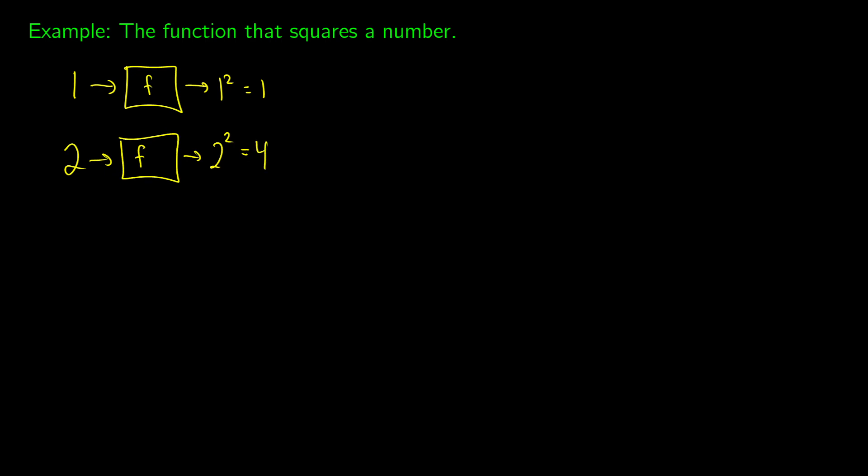So what's happening algebraically? Well we're putting an x into our little function machine, and what we're getting out of it is x squared. And we can see this here. So one becomes one squared, two becomes two squared. So in a function machine notation, x goes into f and then becomes x squared. X squared is the output, and x is our input. So as a function we can write f(x) is equal to x squared.